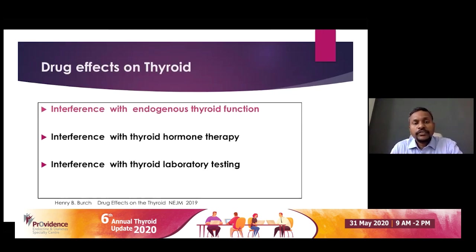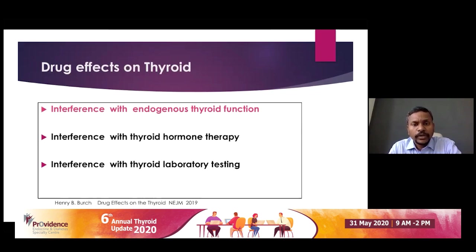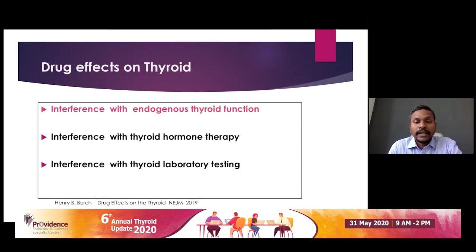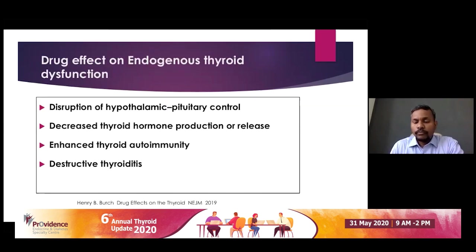The second is interference with thyroid hormone therapy — basically thyroid absorption is being affected. Third is interference with thyroid lab testing. This is also very important because these patients are mostly euthyroid, but because of the drug action there is some abnormality in the thyroid function test. Identifying this is very important because otherwise you may treat many euthyroid patients just because of abnormal thyroid lab testing. Looking at the first one — interference with endogenous thyroid function — it can cause various levels of problems.